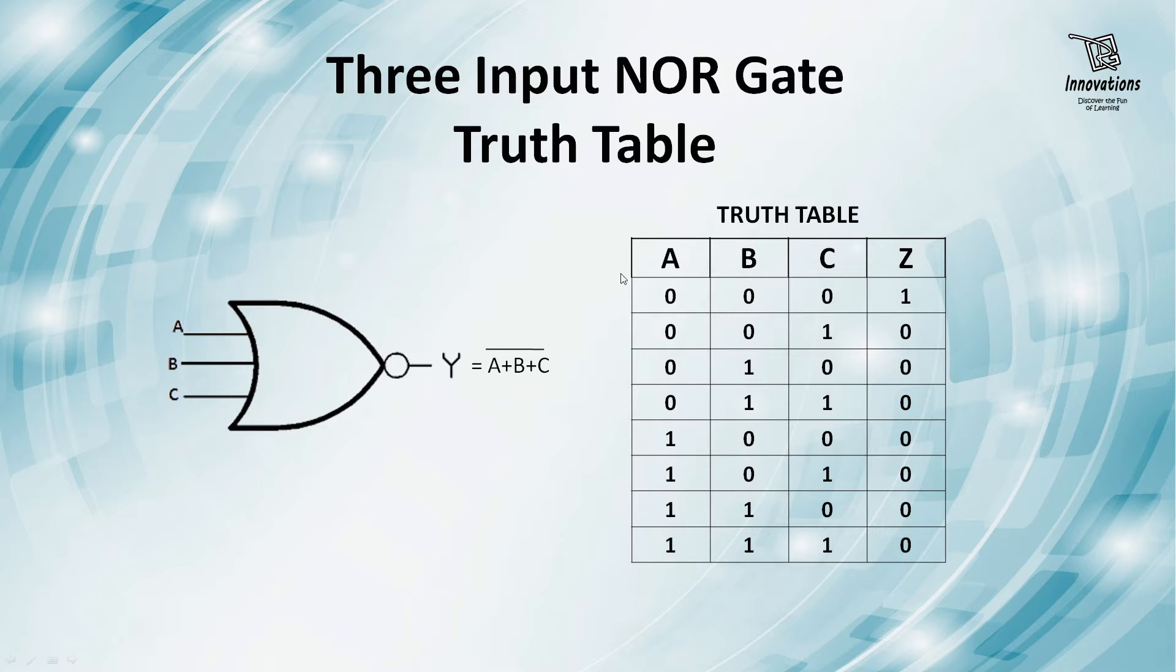Now if we have a look at the truth table, if A, B, C are the inputs and Z is the output, when the input is 0 0 0, the output is 1. And in all other input combinations, the output is always 0. Whether a single input is 1 or all the inputs are 1, the output is always 0.